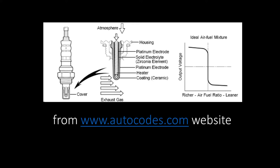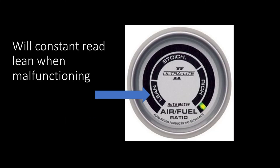One more quick note on O2 sensors: they require being at an operating temperature to read properly. Typically at startup, an O2 sensor will not read the right value until it's warmed up. It has a heating circuit inside that allows it to get up to operating temperature, and then it'll start properly reading the lambda or AFR value. O2 sensors that go bad typically start to read lean when there's no load or you're under a cruising condition.